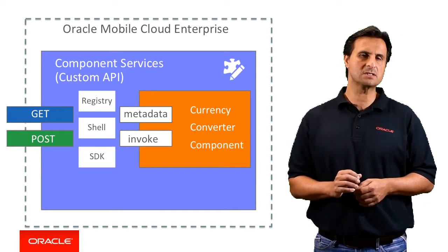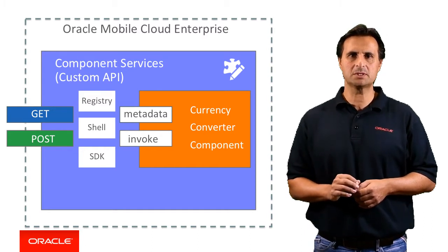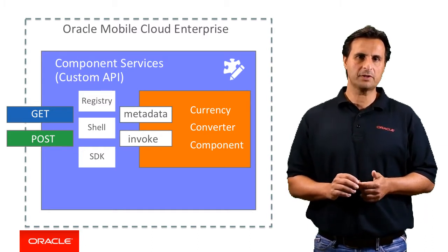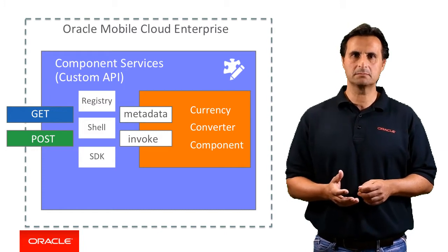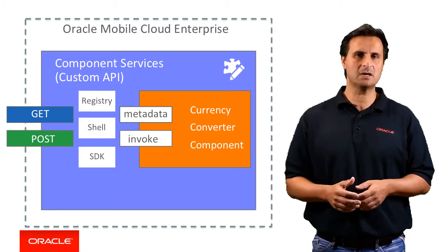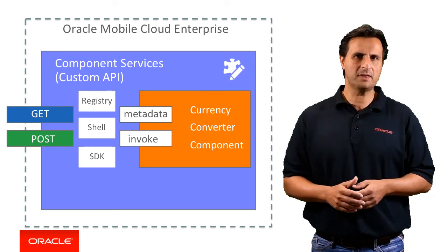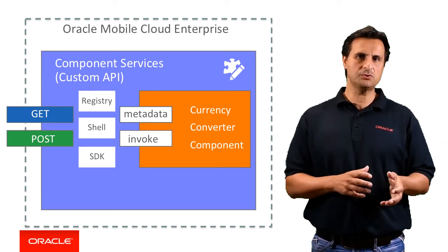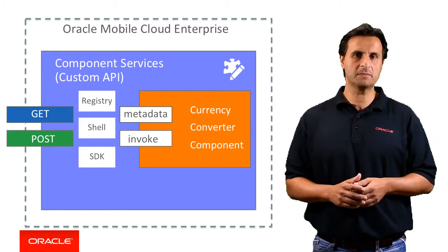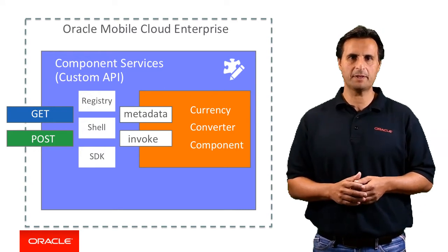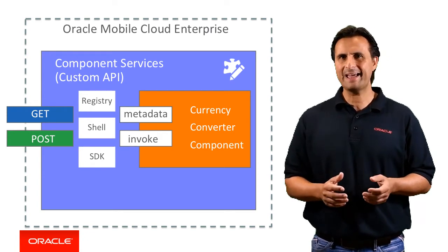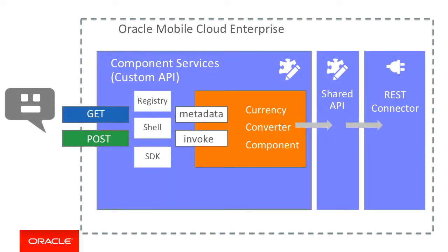There's one more object provided in the starter application: the SDK. The SDK is passed to the custom component by the shell when it calls the component's invoke method. For the currency converter example, the SDK gives the component access to the input parameters like the base currency, the base amount, and the target currencies. The custom component then invokes the shared data access layer introduced earlier to obtain the currency conversion from the remote REST service. When the call succeeds, a response is returned by the custom component to the bot using functionality exposed by the SDK. And there it is — the completed architecture for building Oracle Intelligent Bot custom components in Oracle Mobile Cloud Enterprise.